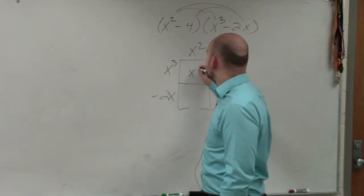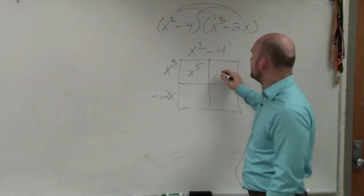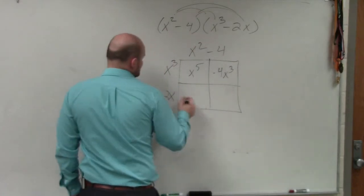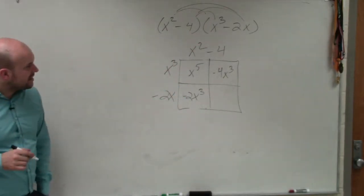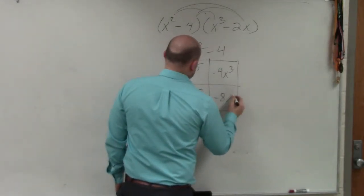x cubed times x squared is x to the fifth. x cubed times negative 4 is negative 4x cubed. x squared times negative 2x is negative 2x cubed. And negative 2x times negative 4 is negative 8x.